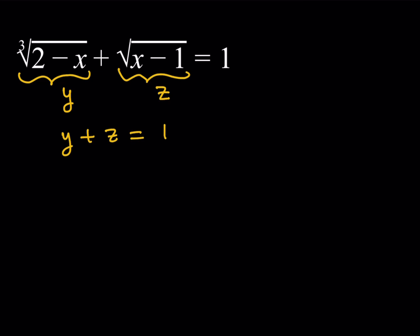Not only that, we get more results. For example, because the cube root of 2 minus x is equal to y, I can cube both sides. That's going to give me 2 minus x is equal to y cubed. From the second radical, which is z, if you square both sides, you're going to get x minus 1 is equal to z squared. Great.